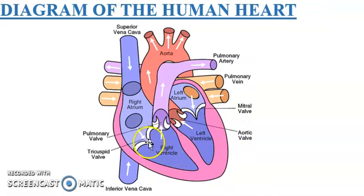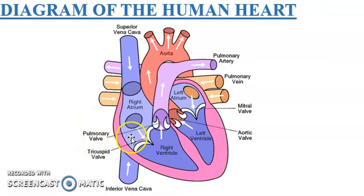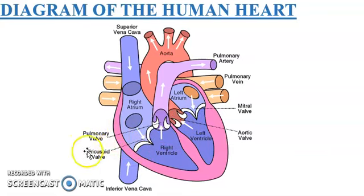The human heart is also made up of valves — four in number. Valves are flap-like structures, or ducts. Their main function is to maintain the direction of blood flow, ensuring that blood flows in only one direction and preventing the backflow of blood.